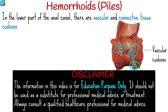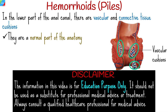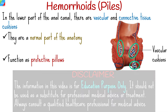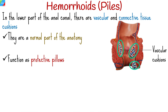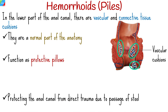In the lower part of the anal canal, there are vascular and connective tissue cushions. They are a normal part of the anatomy and function as protective pillows that engorge with blood during the act of defecation, protecting the anal canal from direct trauma due to passage of stool.